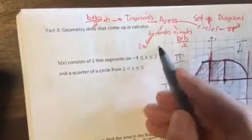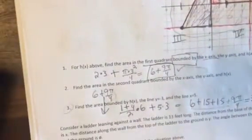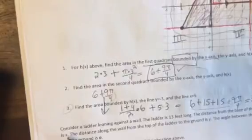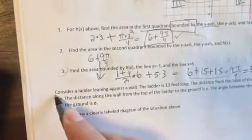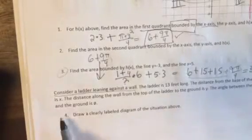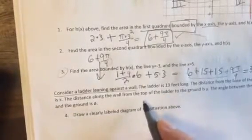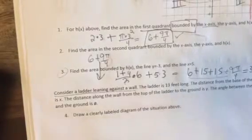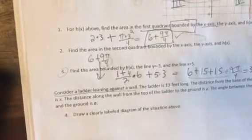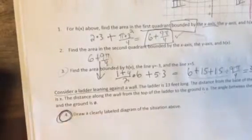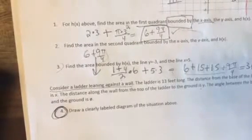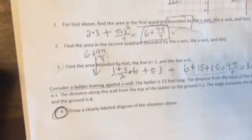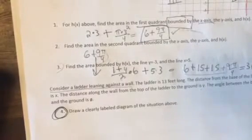So that's finding areas — circles, triangles, rectangles, trapezoids. The next thing is being able to set up diagrams. This is a pretty classic calculus setup; we will definitely be doing a problem exactly like this later this year. Consider a ladder leaning against a wall. The ladder is 13 feet long. The distance from the base of the ladder to the wall is x, and the distance along the wall from the top of the ladder to the ground is y. The angle between the base of the ladder and the ground is theta. If you haven't done this yourself already, stop the video and try it yourself.